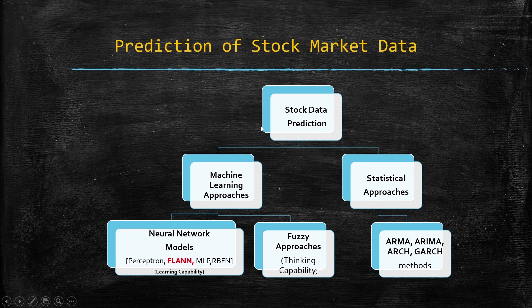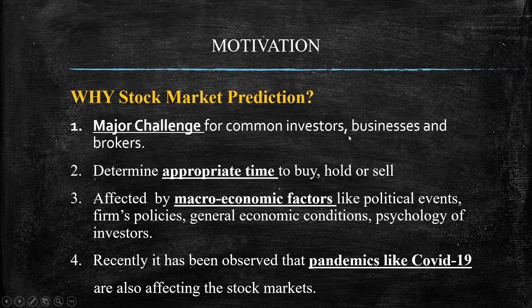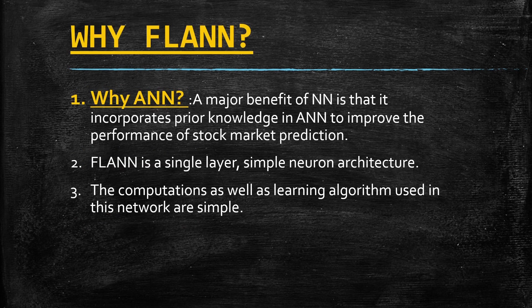Stock market data is generally predicted using machine learning approaches, and there are statistical approaches also. For training of the neural network, I have used back propagation as well as Jaya. Here is the motivation behind it and the theories on whether the stock market can really be predicted, and now why FLAN is used.